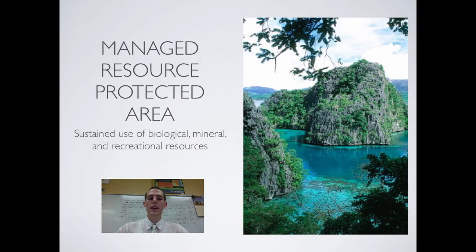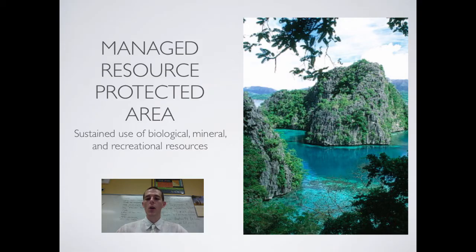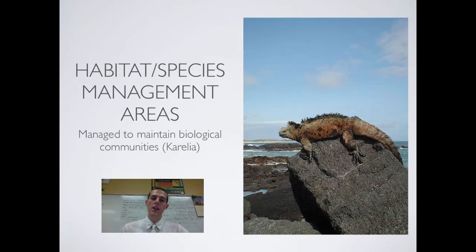Next is a managed resource protected area, set aside for sustained use of biological, mineral, and recreational resources. These areas say the resources can be used, but must be used sustainably. For example, a beautiful seashore area would be managed for recreational use — snorkeling, boating — but could also be used for hunting or logging, as long as it's a sustained use of the resources in that area.